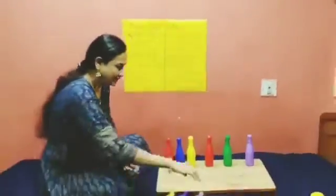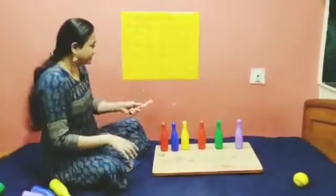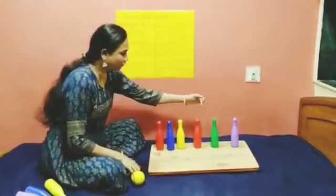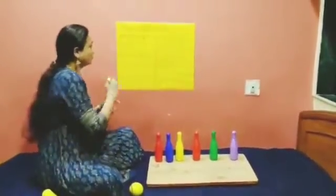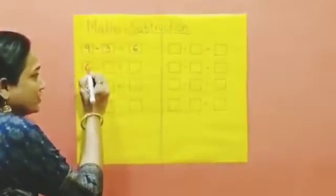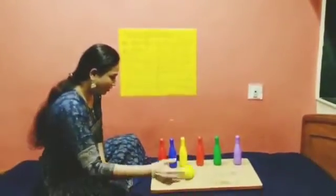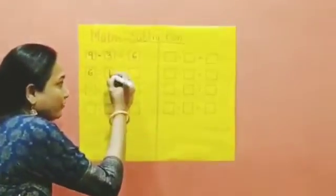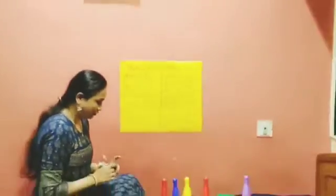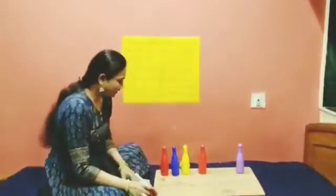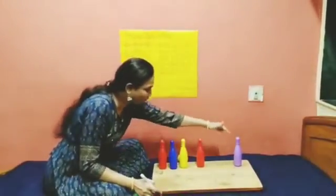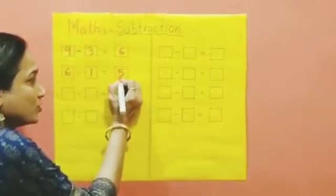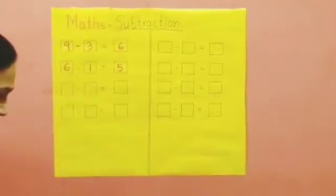So this is what our subtraction. Now 6 bottles are there — let's count: 1, 2, 3, 4, 5, 6. And if I throw the ball, 1 bottle fell down. How many bottles are remaining? 1, 2, 3, 4, 5. So 5 bottles are remaining. So 6 minus 1 is 5.